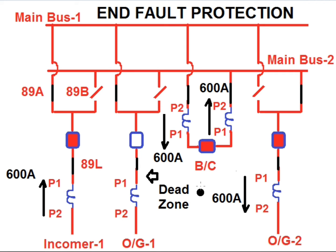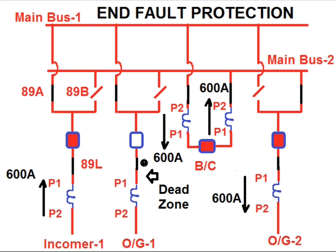Under these circumstances, the outgoing feeder 1 shutdown is withdrawn. For this condition the isolator 89A is closed and 89L, the line isolator, is also closed. Now the breaker is about to close — the breaker is currently in off condition. So a dead zone is created. The dead zone is defined by the open element and the CT position. The dead zone is between the CT and the open breaker — this portion is called the dead zone. Under this zone, if any fault occurs, this current will not be calculated as a differential current; rather it will be detected by the bus bar relay as an end fault or dead zone protection.